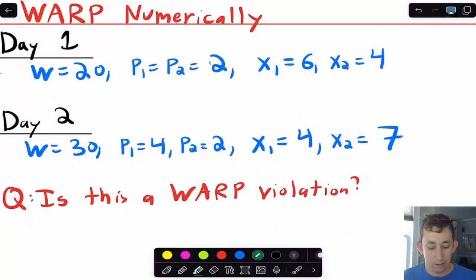So here's my numerical example. I'm going to say on day one, you walk in the store, you've got 20 bucks, prices are each $2, and you buy six of good one and four of good two. And then on day two, you walk in, you've got 30 bucks, the price of good one is four, the price of good two is two. You walk in and you get four x1s and seven x2s. So the natural question is, is this a WARP violation?